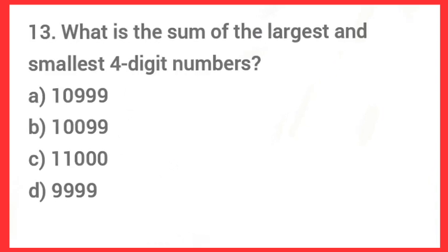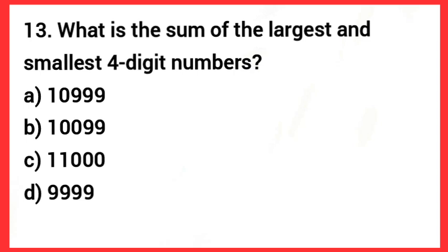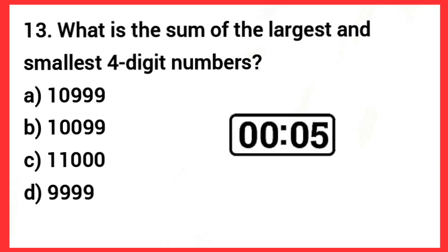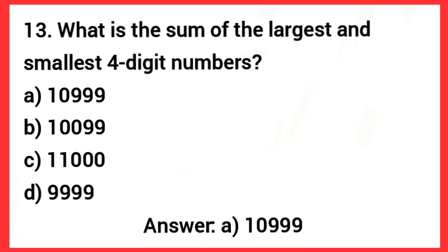Next one: What is the sum of the largest and smallest four digit numbers? Answer: Option A — 10,999.